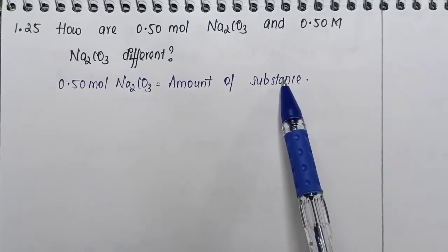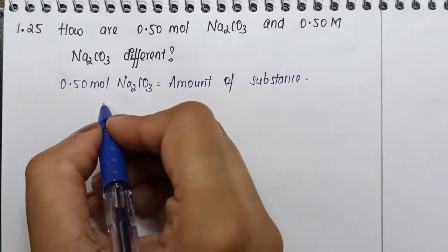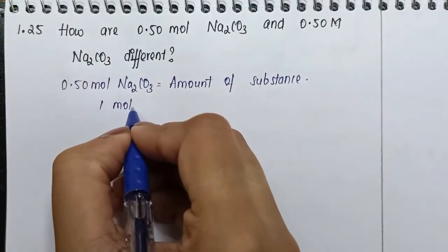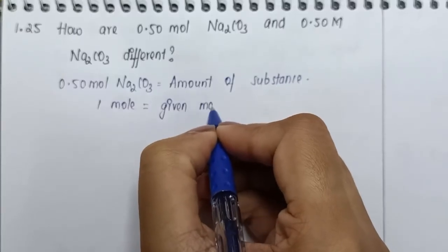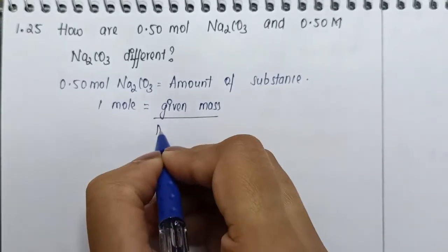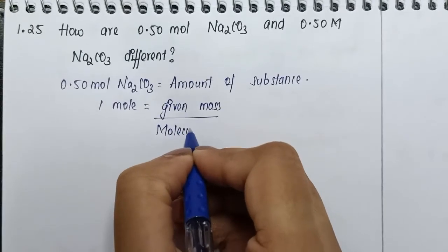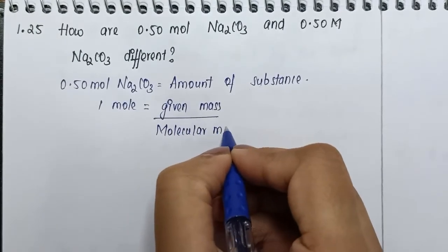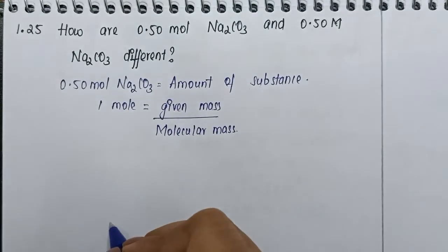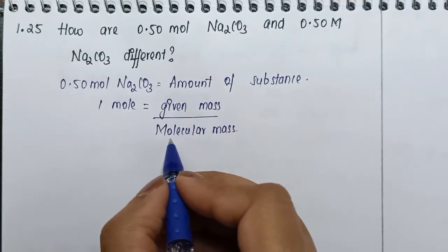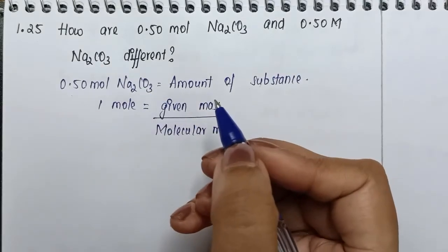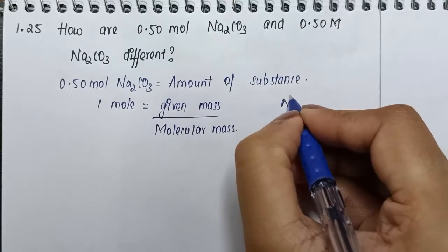Here, one mole equals given mass divided by molecular mass. That is the formula for number of moles. Given mass we don't know, mole we know it's here. Molecular mass of sodium carbonate is easy to find out.